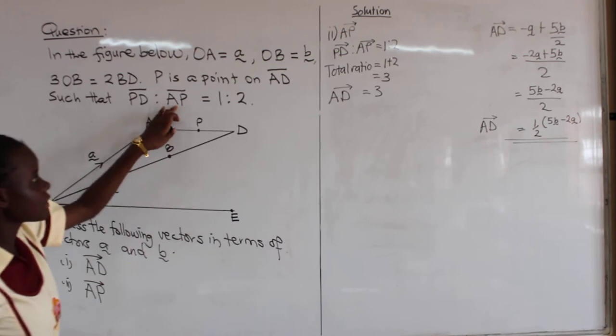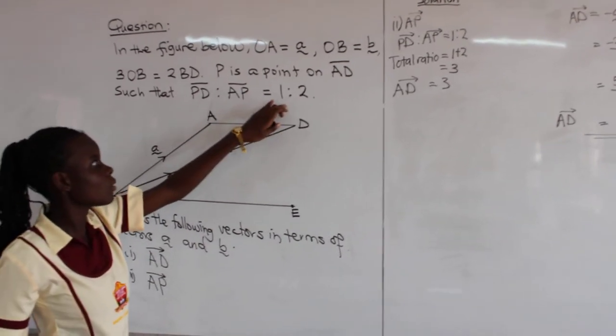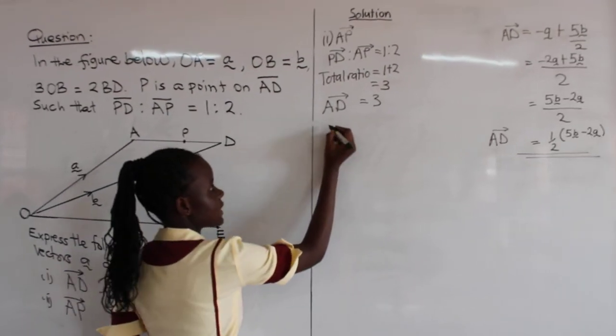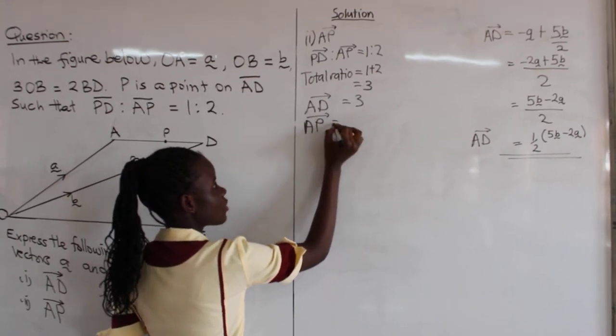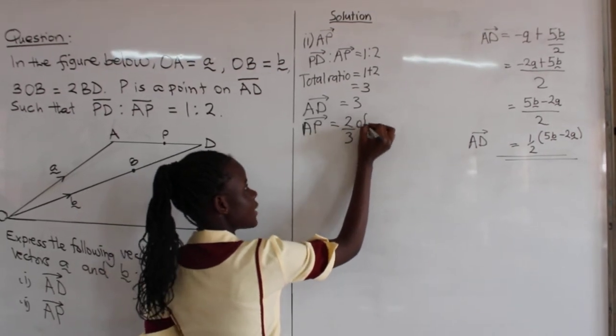And they said P is a point on AD. So this will imply that 2 out of 3 of AD is equal to AP. So we shall say AP is equal to 2 out of 3 of AD.